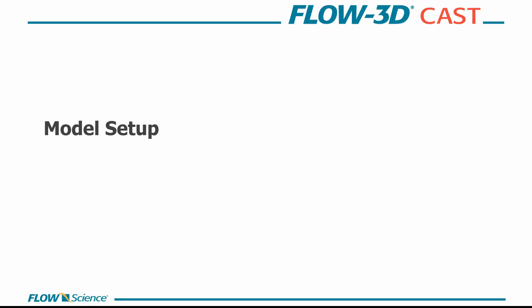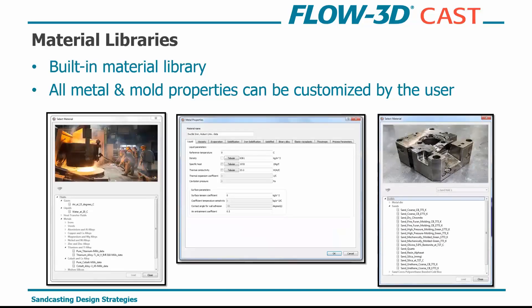Let's talk briefly about model setup before we get into the cases. The basic workflow starts with selecting a material. Flow3D Cast comes with built-in material libraries for alloys and molds. All properties can be customized — if you're working with a special or exotic alloy that you have proprietary properties for, you can input that into the solver. You can also test different types of mold compositions depending on what binder you're using.